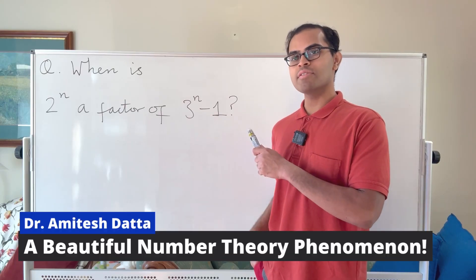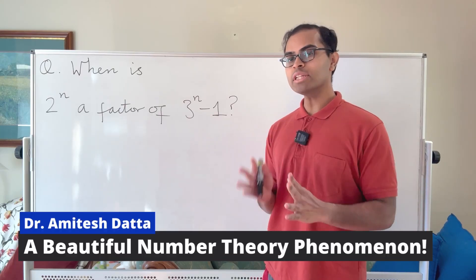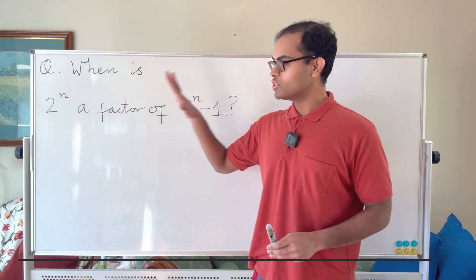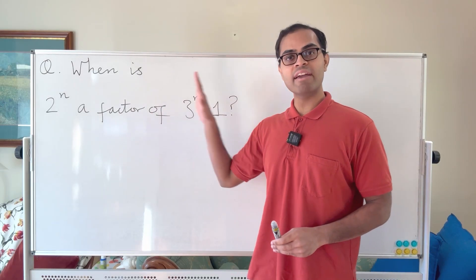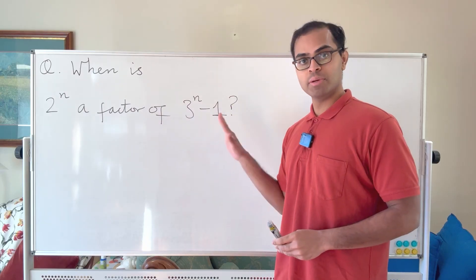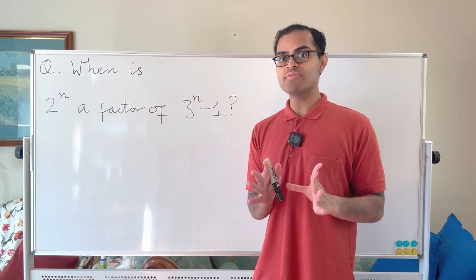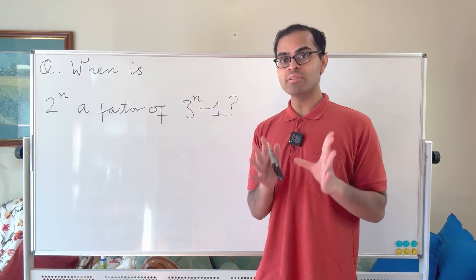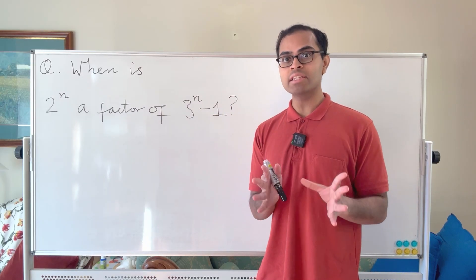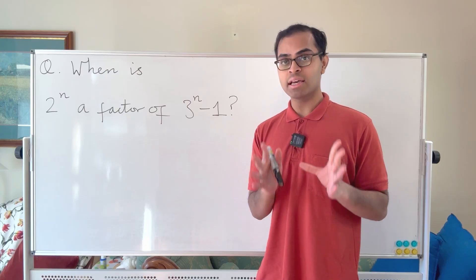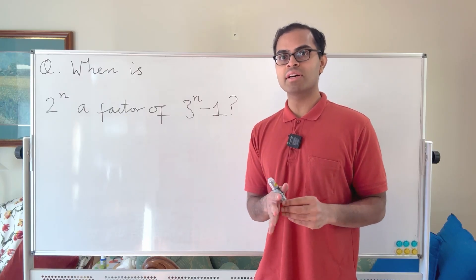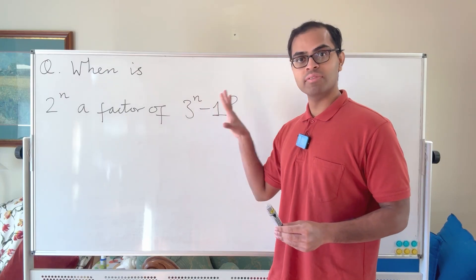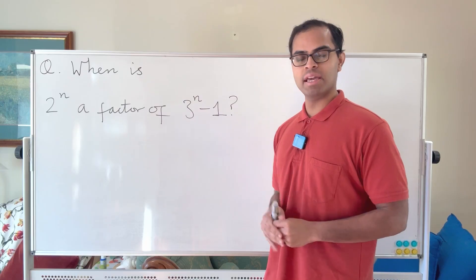This is a beautiful number theory problem: which positive integers n make 2^n a factor of 3^n minus 1? At the end of this video I'll explain a revolutionary and deep piece of mathematics intrinsically connected to our universe that is basically related to solving this problem.